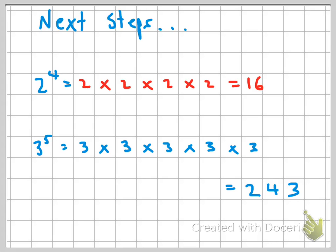Now your next step — now you know the pattern, you can pretty much do any number to the power of whatever number you like. So if we look at this example: two to the power of four. Well, that's two times two times two times two — two times itself four times — and that equals 16. It doesn't equal two times four; it equals two times two times two times two. Here's another example: three to the power of five equals three times three times three times three times three, and that equals 243.